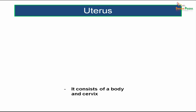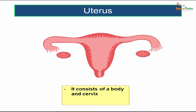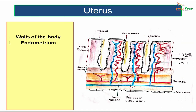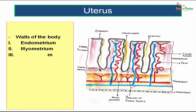We will come to the reproductive organs first, the foremost being the uterus. It consists of a body and a cervix. The walls of the uterus are made up of three layers: the innermost lining is the endometrium, after that we have a muscle layer called the myometrium, and towards the periphery you have the perimetrium.